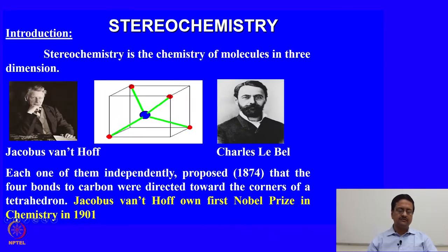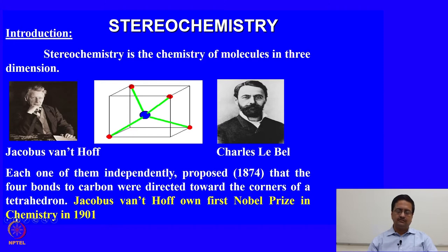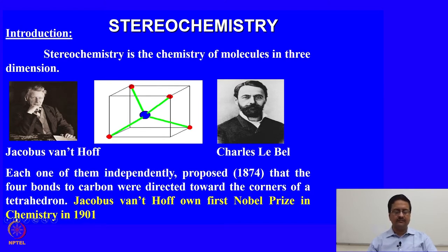Stereochemistry was introduced more than 100 years ago. Stereochemistry is the chemistry of molecules in three dimensions. We learn the orientations of atoms around a carbon atom, and based on those orientations we try to understand different reactions and reaction mechanisms, which will be discussed in the next part of this course.